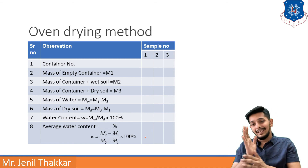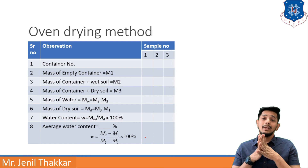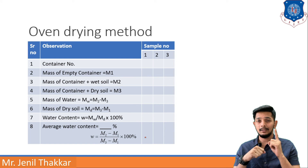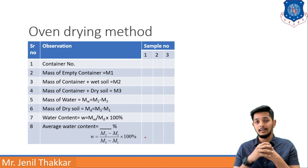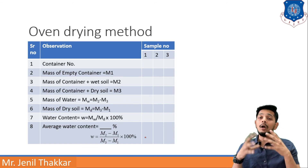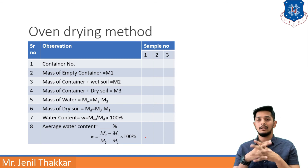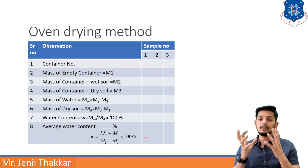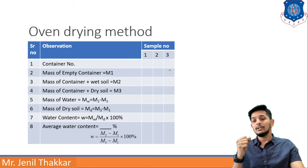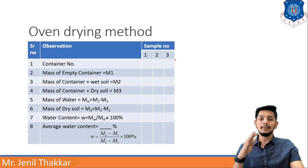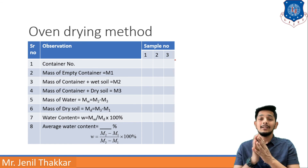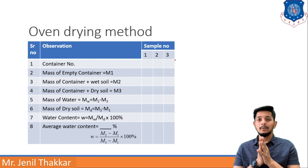The same procedure is followed for sample number 2 and sample number 3. When testing on site, you should not rely on only one sample's results — generally a minimum of three samples are taken for accuracy. All three samples should show approximately similar water content values. If the values vary by a wide margin, you will need to collect and test samples again. That concludes the oven drying method for water content determination. Thank you for listening; the next chapter will be covered in the next video.